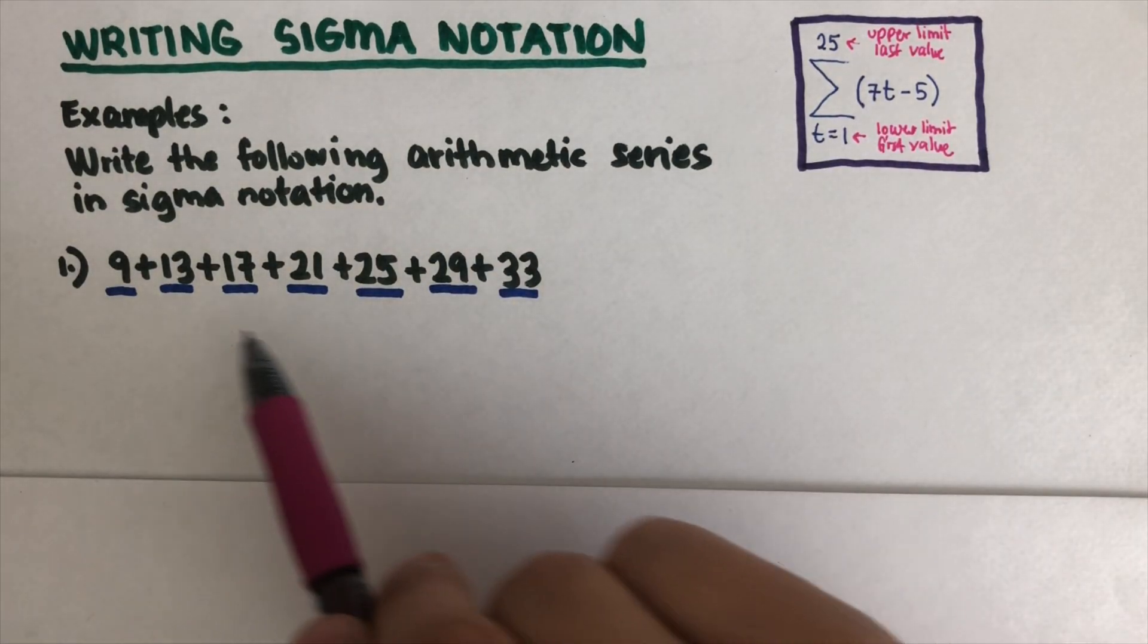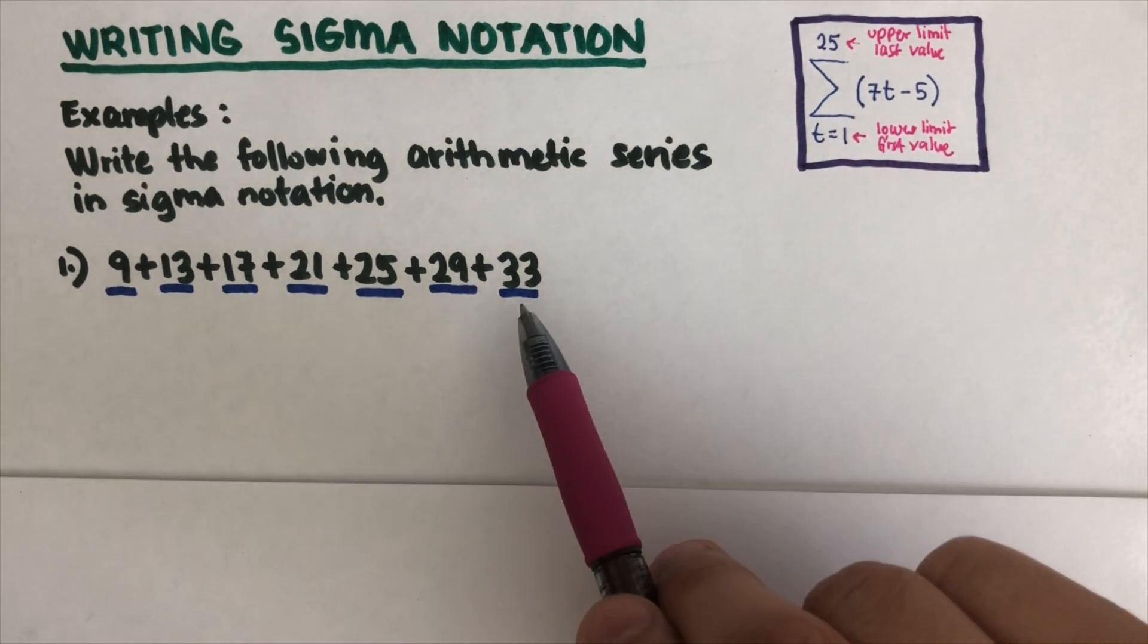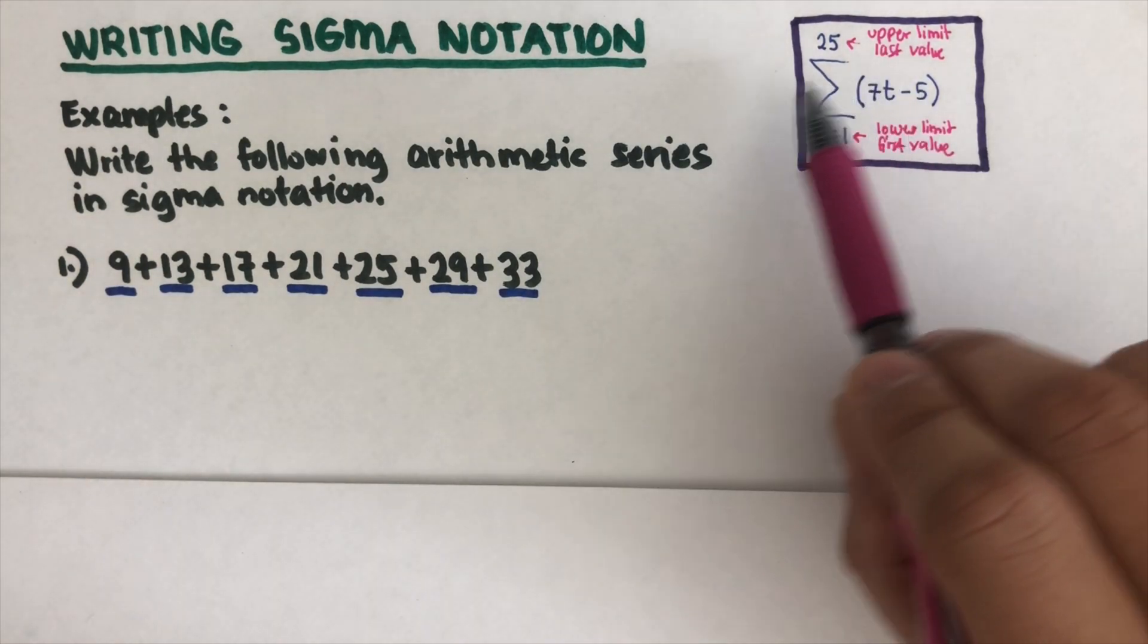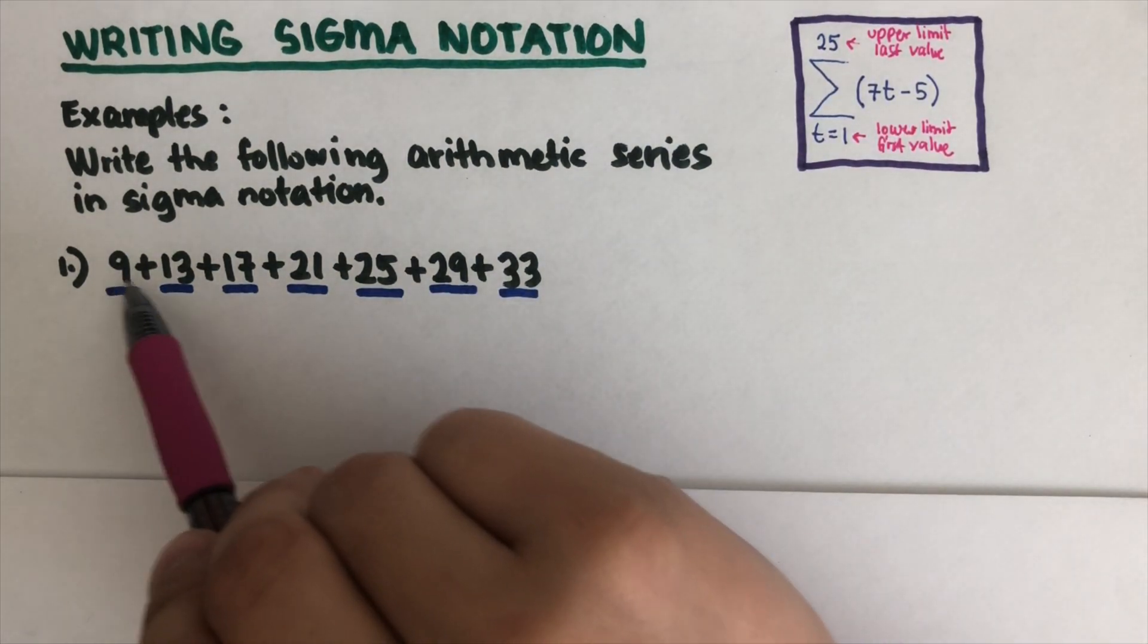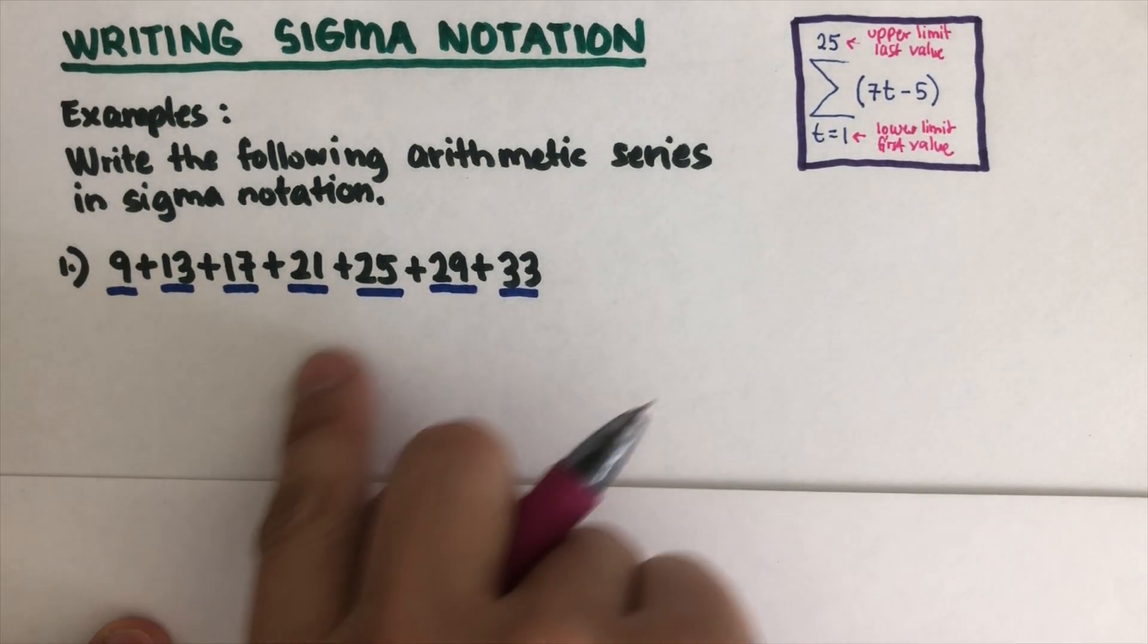The purpose for writing this Sigma notation is to make a shorter work in writing the sum of numbers. First thing that we are going to do is to find the equation that will work for this, so we're gonna look for the t(n).